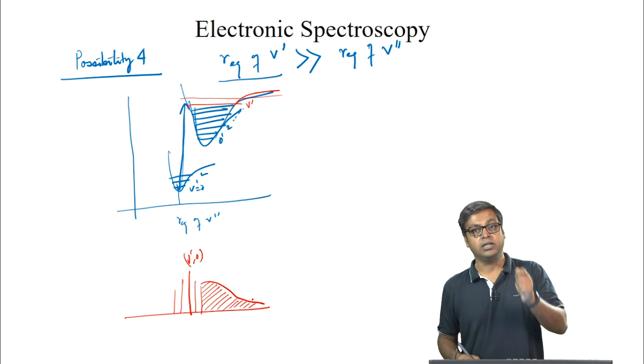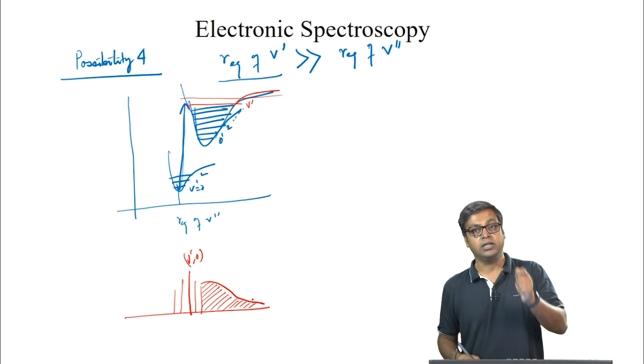We discussed these four possibilities based on the difference in R_equilibrium of the lower and upper states. This brings us to the end of this lecture, and we will discuss dissociation energy in detail in the next lecture.